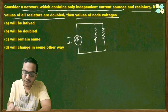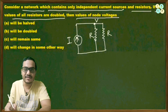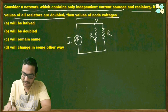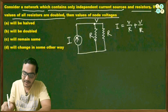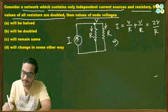Let this one node have voltage v, with two resistances R each in parallel. Applying KCL to node v: the total current entering is i, equal to v/R + v/R = 2v/R.